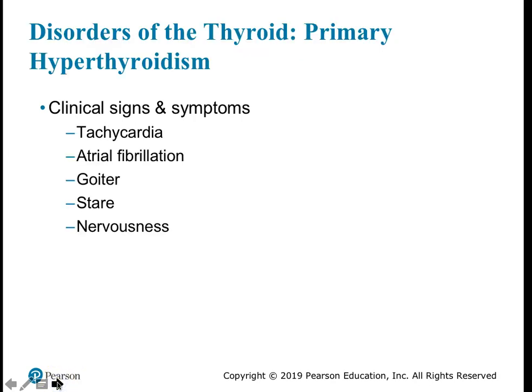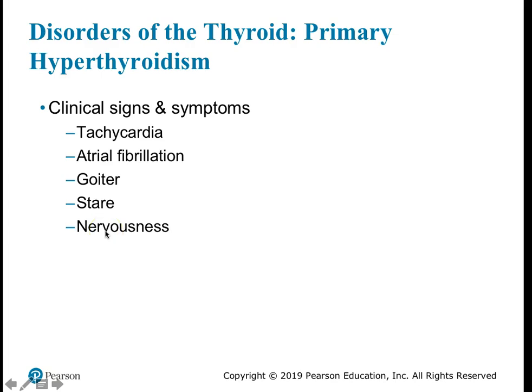With Graves disease, the hyperactive metabolism from excess T3 and T4 causes symptoms including weight loss, tachycardia, possible atrial fibrillation, goiter, and a characteristic wide-eyed stare from bulging eyes (exophthalmos). Patients may also appear nervous. Blood tests help narrow down the diagnosis from these nonspecific symptoms.